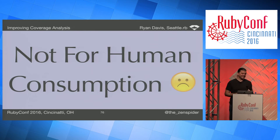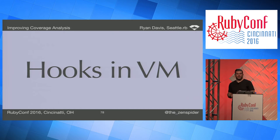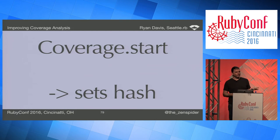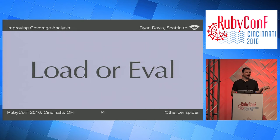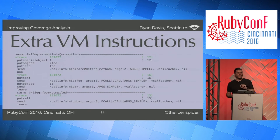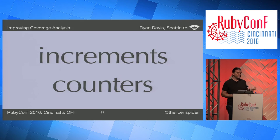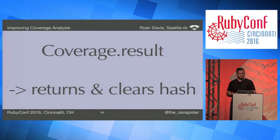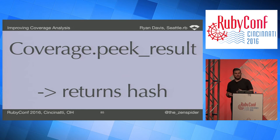Coverage isn't really meant for use by end users — it's meant to be used by other tools. It has hooks into the Ruby VM: when you call `coverage.start`, you set internal state, and any code loaded after that gets laced with extra bytecode instructions to record coverage. Each line run increments a number in the hash. Calling `coverage.result` returns a copy of the data, turns the whole thing off, and clears it — which is problematic for what I'm trying to solve.